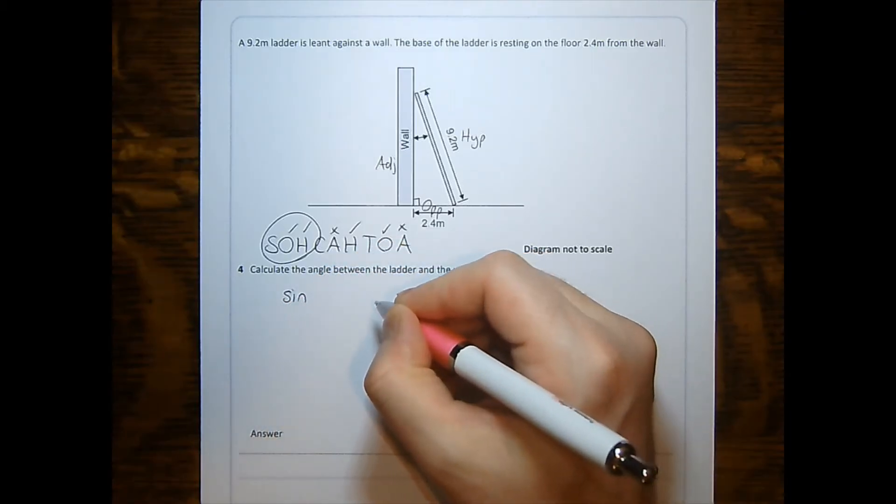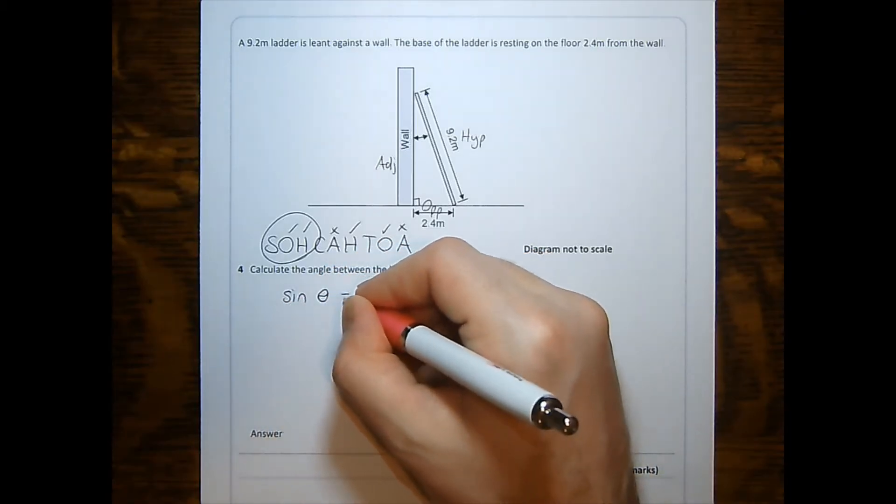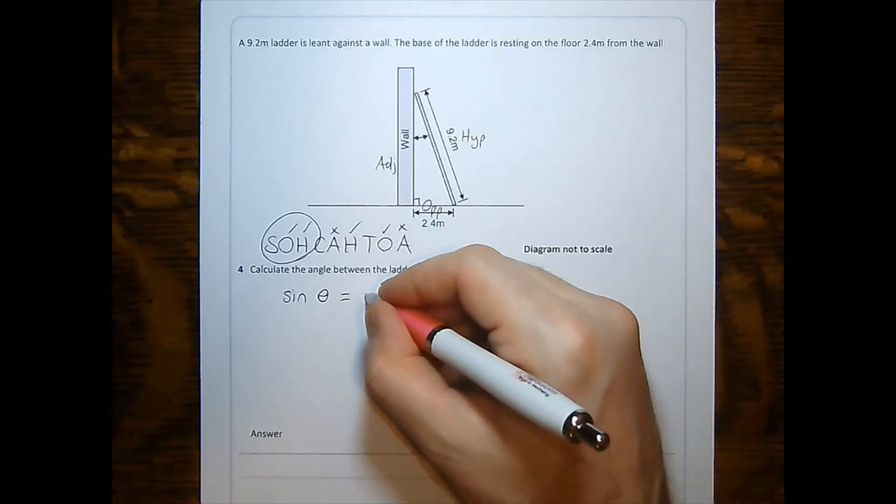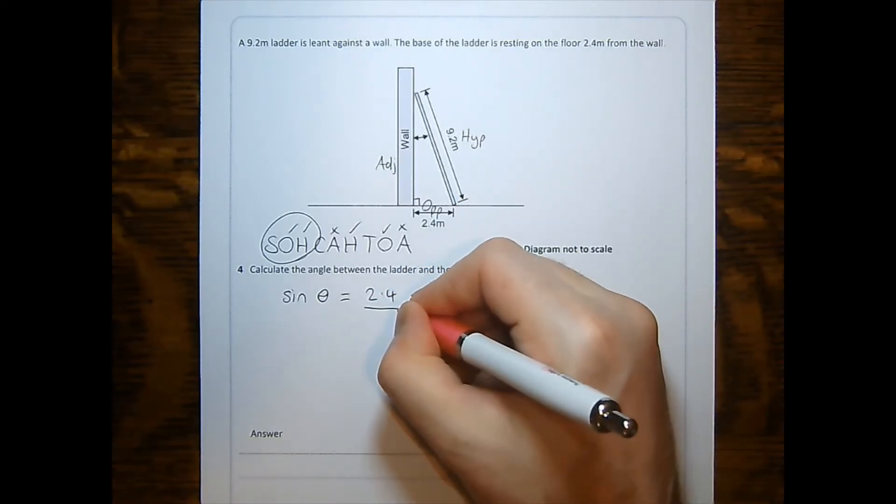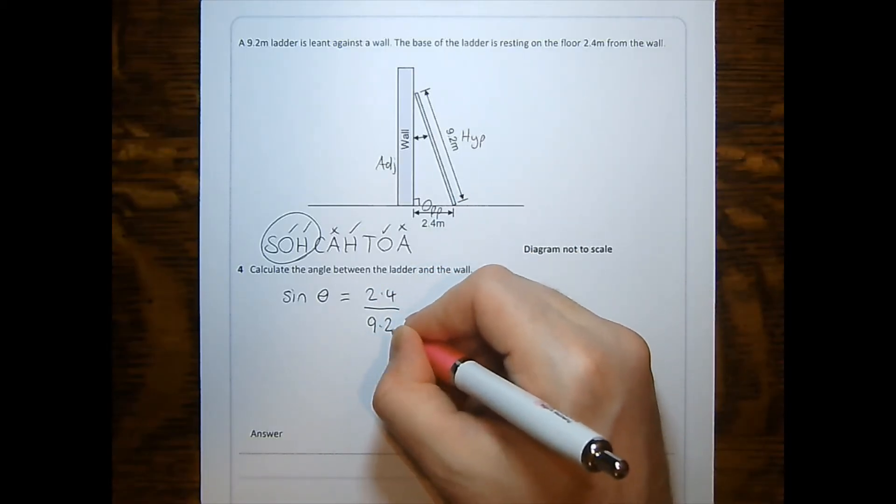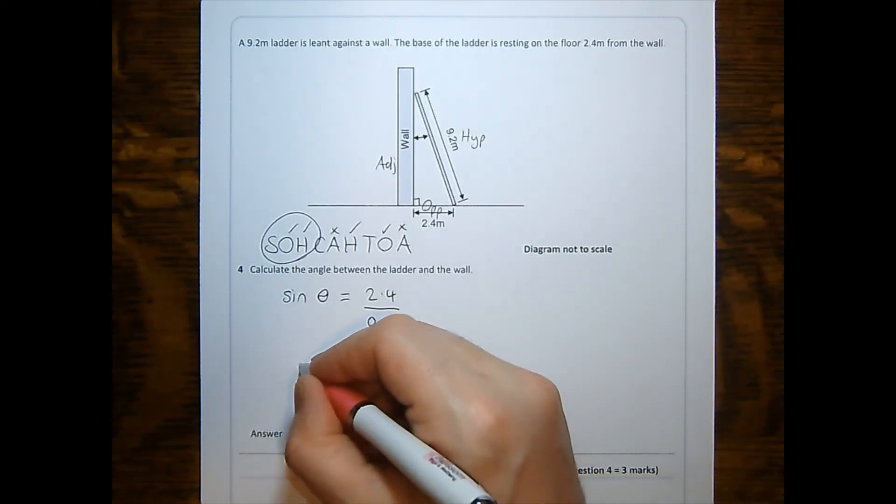Sine of the angle is equal to the opposite of 2.4 divided by the hypotenuse of 9.2. That's my substitution for the first mark.